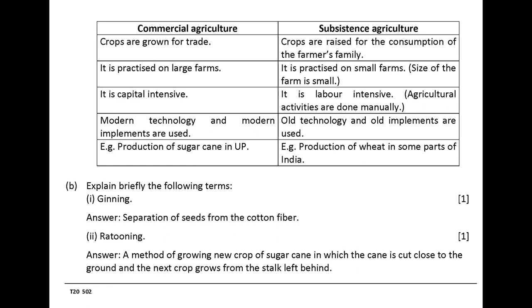Explain briefly the following terms. Ginning: separation of seeds from the cotton fiber. Ratooning: a method of growing a new crop of sugarcane in which the cane is cut close to the ground and the next crop grows from the stock left behind.